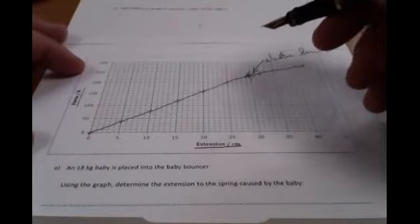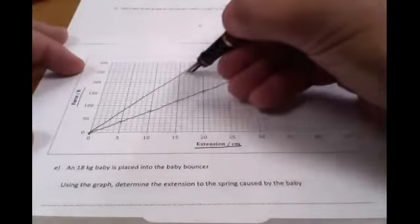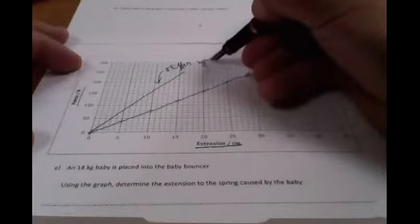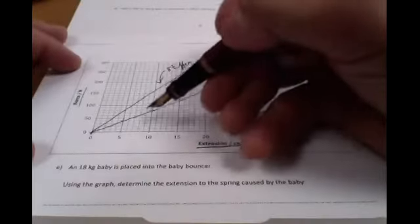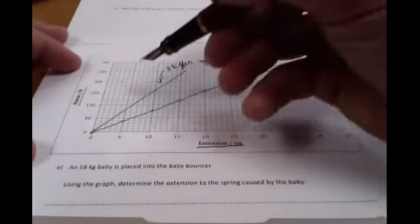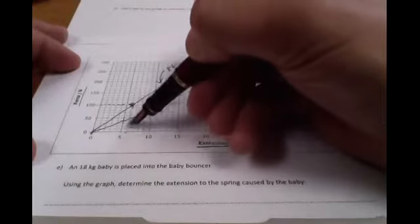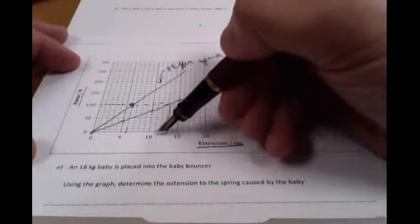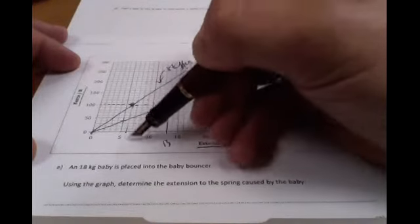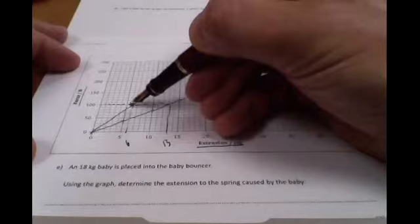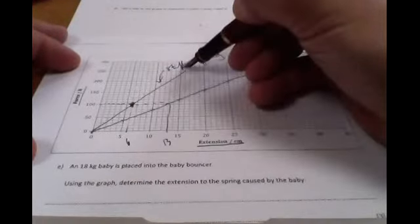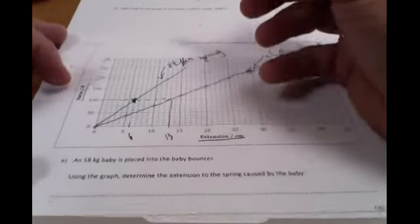What about a stiffer spring? Well, a stiffer spring would actually be up here. The reason you know that's a stiffer spring is gradient issues, but also this. If you put 100 newtons on this spring, this one stretches by 6, whereas this one stretched by about 13. So therefore for the same weight or force, you're getting less of an extension here, so therefore it must be stiffer.